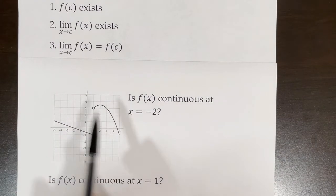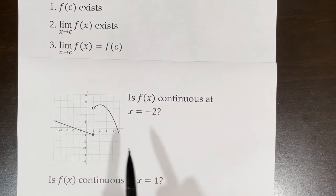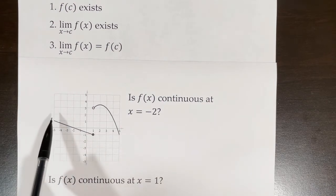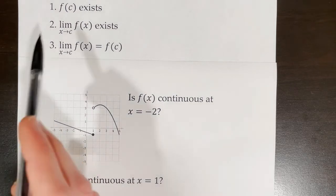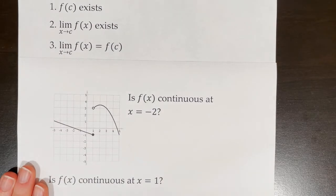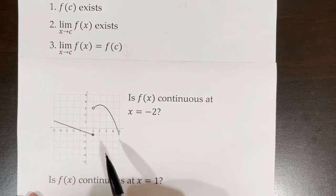In this next example, we're given a graph and we're asked if f of x is continuous at x equals negative two. You might be tempted to look at the graph and say it looks continuous — it's a straight line, there are no jumps or breaks, nothing is approaching infinity. But what I want to do is go through the procedures of determining if the limit exists algebraically, so we can apply it when we're not given a graph.